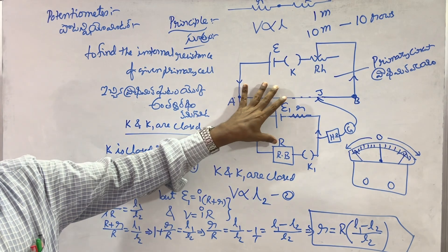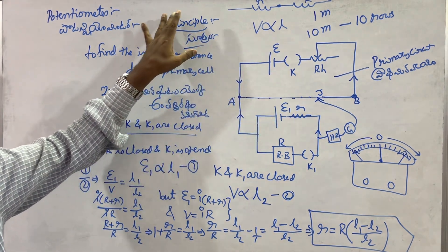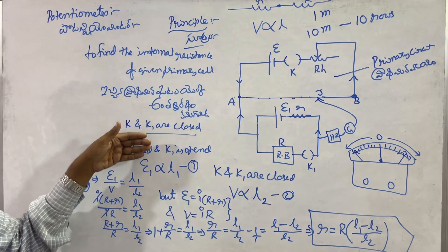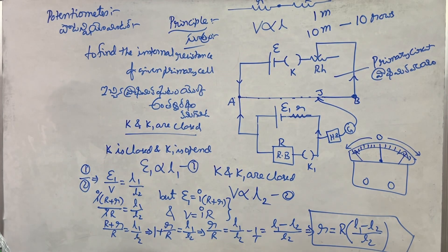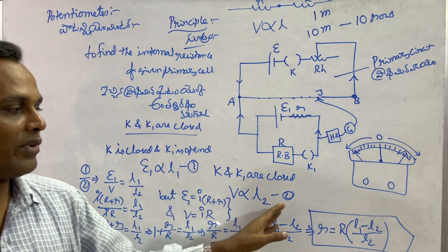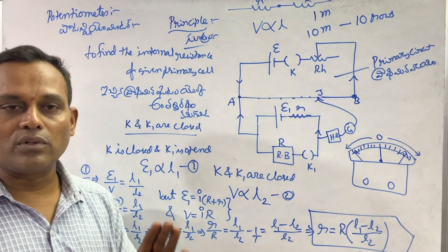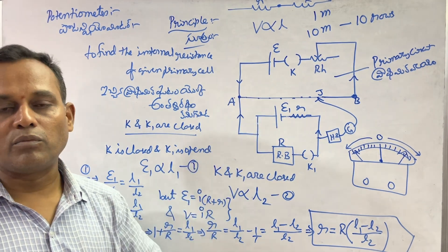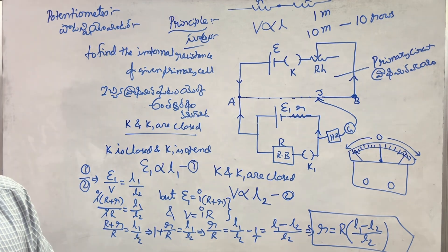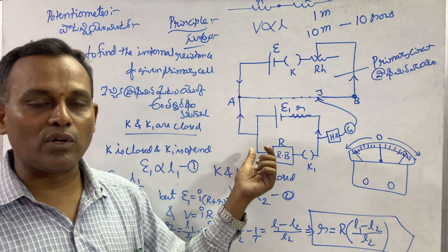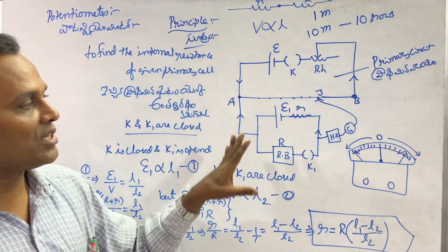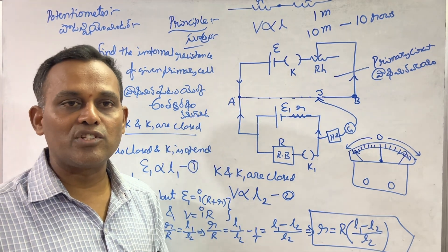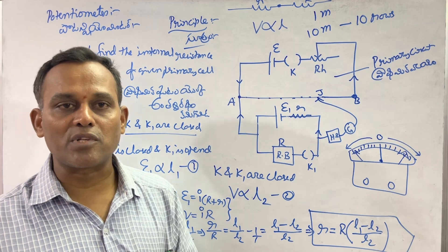From the examination point of view, the circuit diagram is worth 1 mark, the principle is 2 marks, and the derivation equations carry 4 marks, making this an 8-mark question in total. This is one of the most important questions in the exam. If you like this video, please share and subscribe. Thank you.